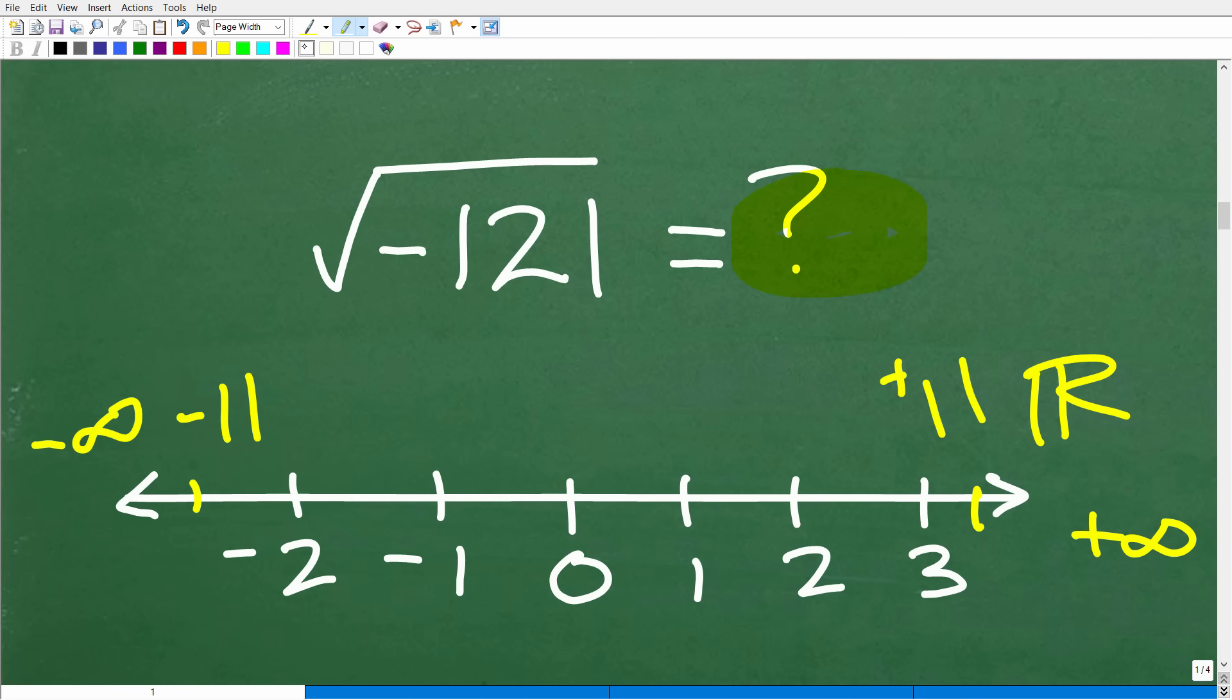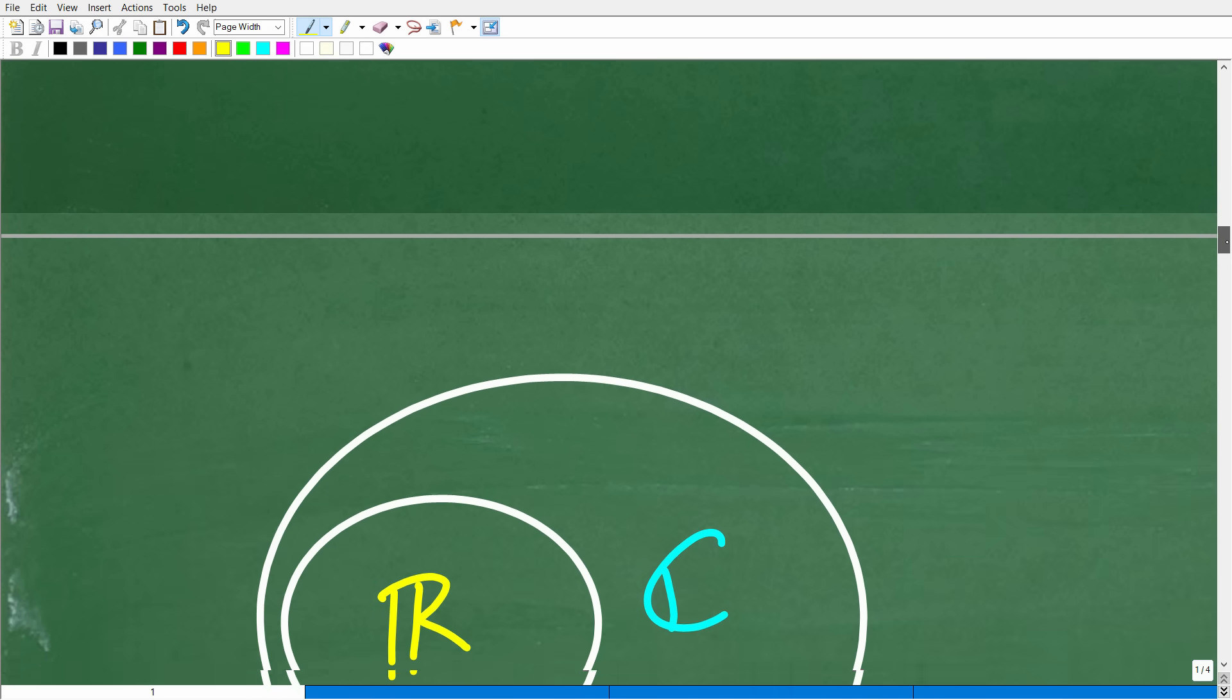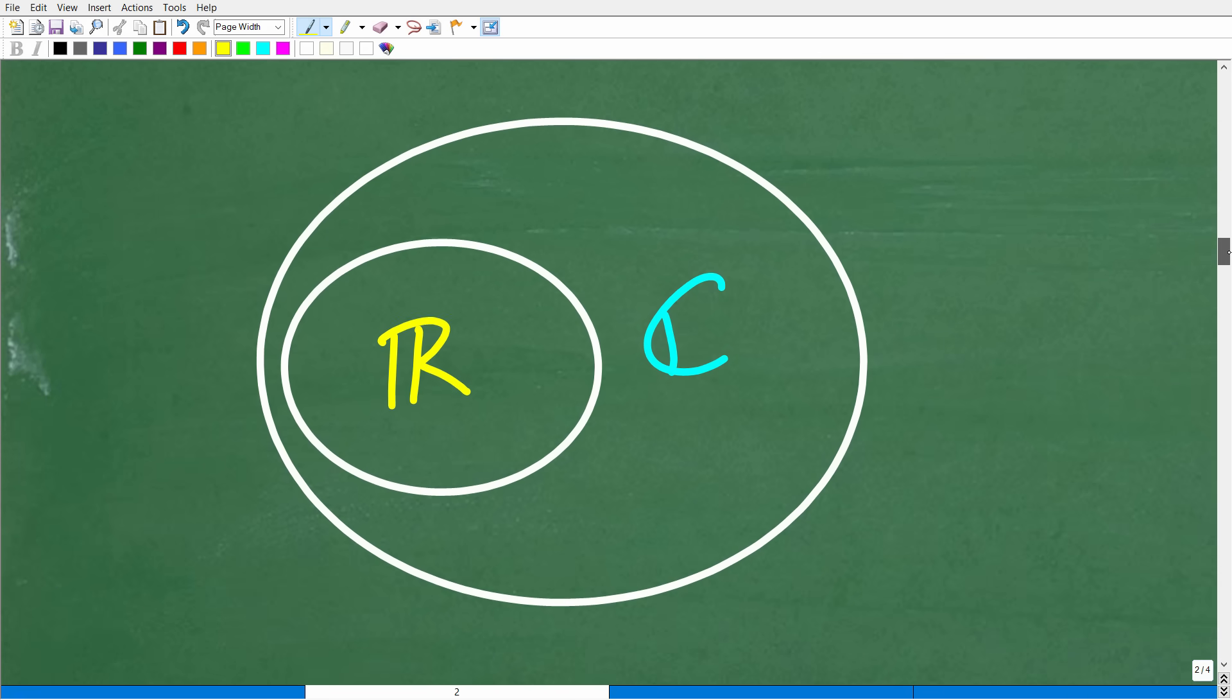So where is the answer? Okay. Or maybe there is no answer to this question. Well, in fact, there is because I told you the answer is 11i. So if the answer to this question is not on the real number line, well, where is it? Well, it's in a completely different number system. Okay. So now let's go ahead and talk about the complex number system.